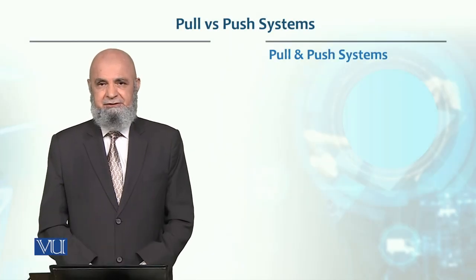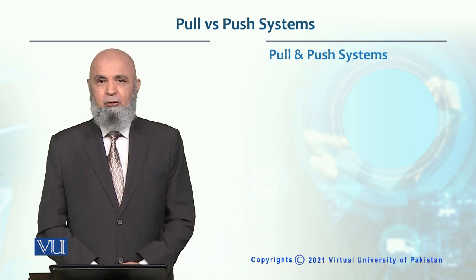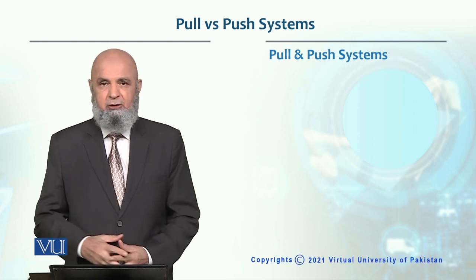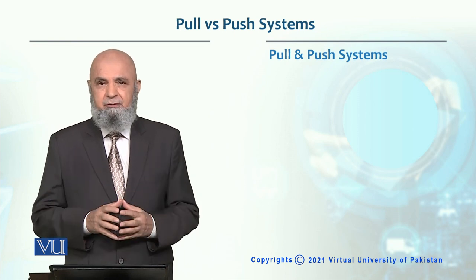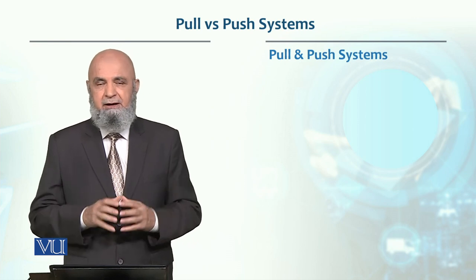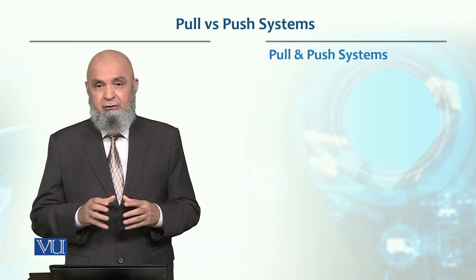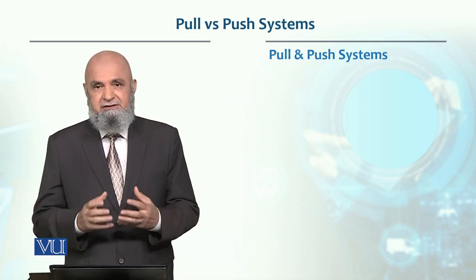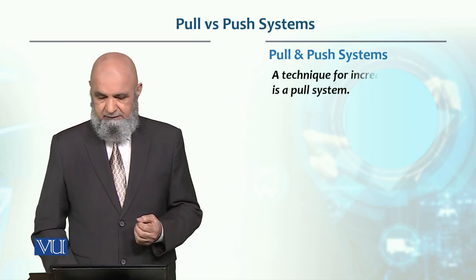There are two types of systems. One is a pull system, where material is pulled throughout the system based on demand. The other is a push system, where the upstream work center pushes material to the downstream work center. Just-in-time chooses the pull system.